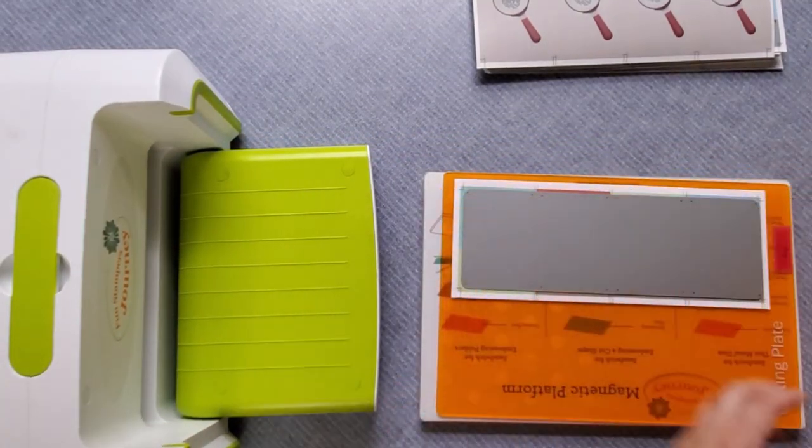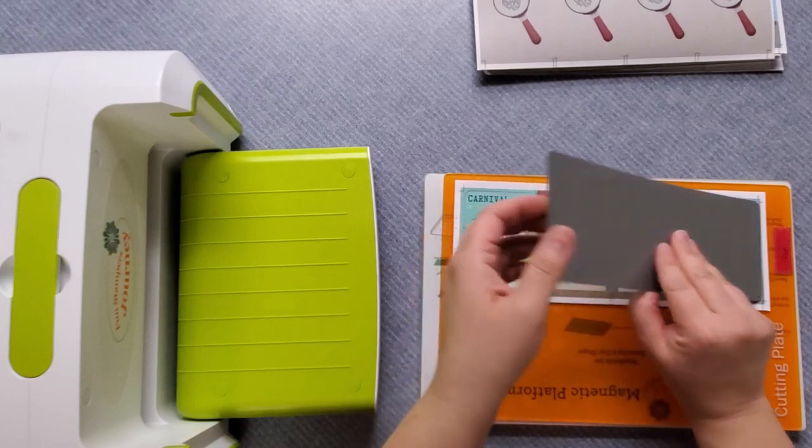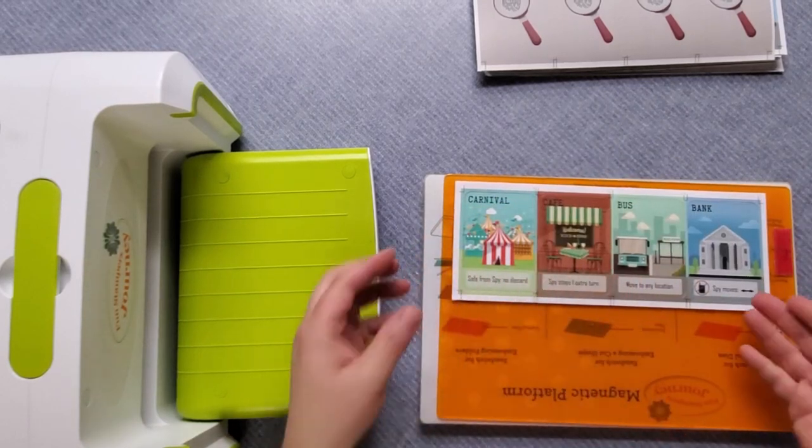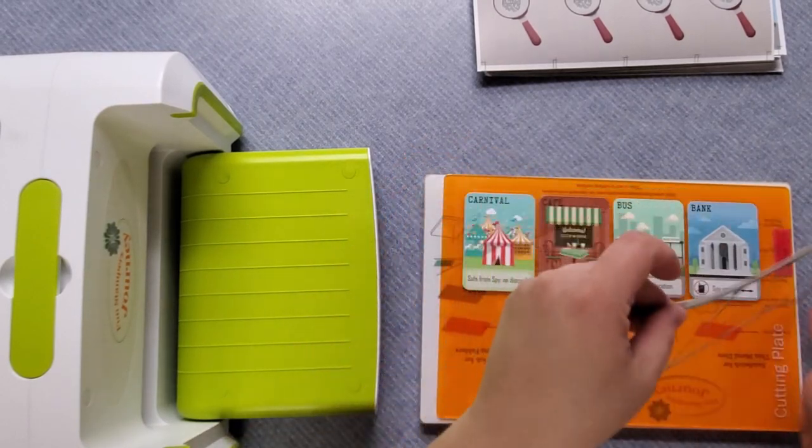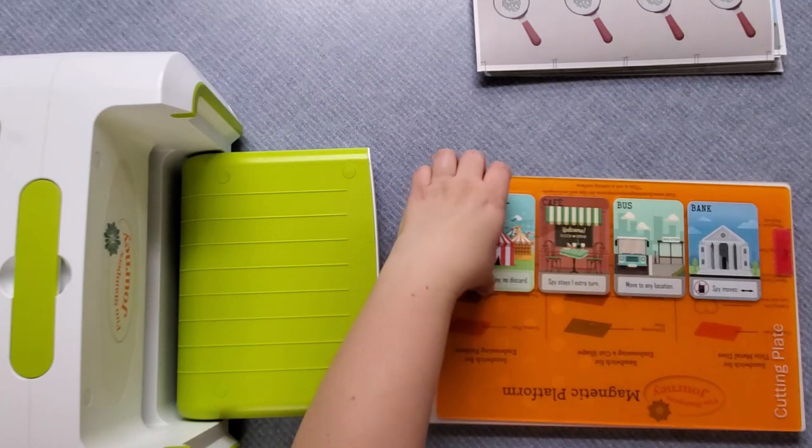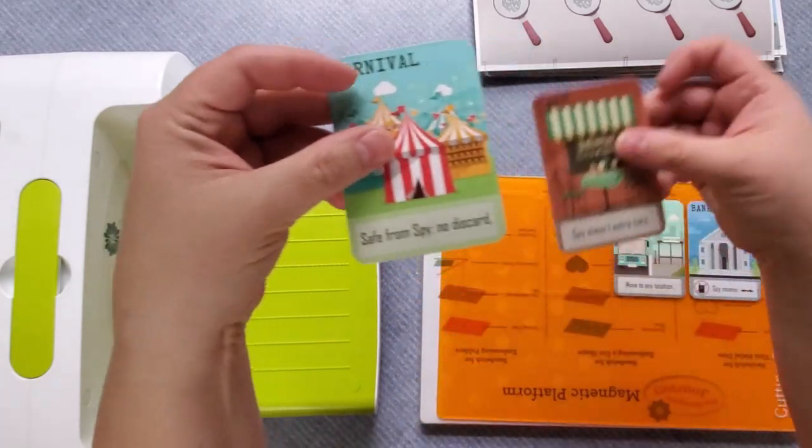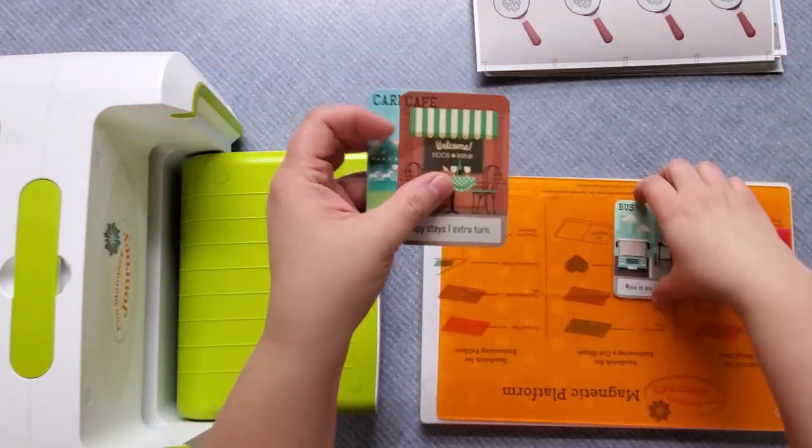Take the top off, pull off the die cut, and voila, look at that. I have four perfectly cut cards.